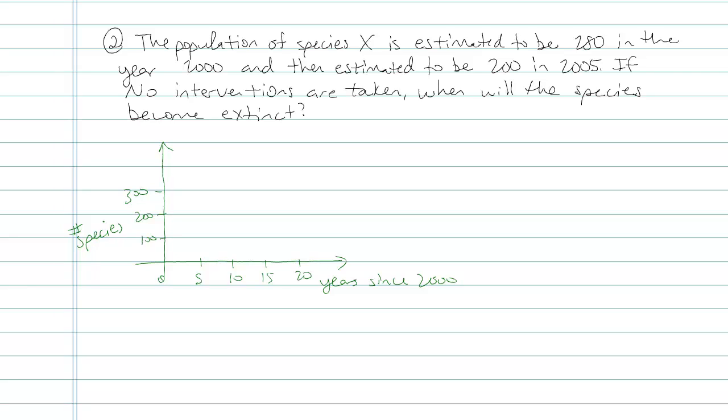Let's get those points on there so we can see what it's talking about visually. The population of species X is estimated to be 280 in the year 2000. So I'm going to put a little dot right here at 0 years, comma, 280. When their study first started, there were 280 in the population. Then it's estimated to be 200 in the year 2005. So that's what this is going to look like right there.